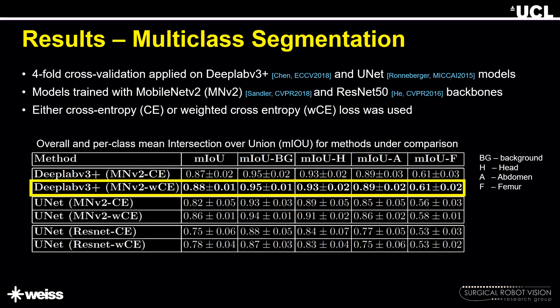Multi-class segmentation results are shown in this slide. We used four-fold cross-validation applied on DeepLab V3+ and U-Net models. The models were trained with MobileNet V2 and ResNet-50 backbones with either cross-entropy or weighted cross-entropy loss. From the analysis based on mean Intersection over Union, we found that DeepLab V3+ with MobileNet and weighted cross-entropy gave the overall best mean IoU performance.